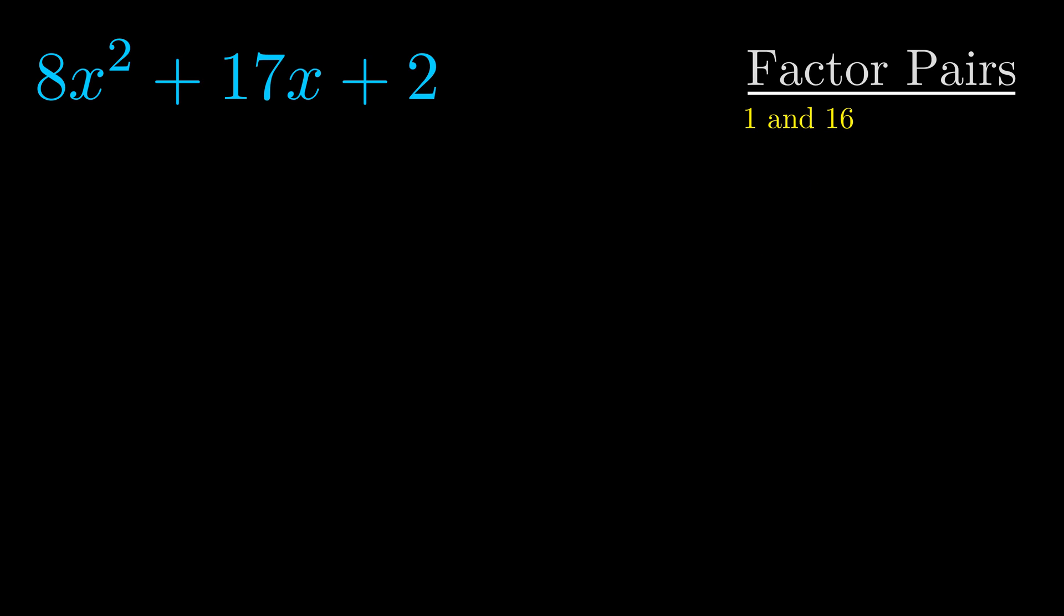Now once we have this factor pair, what we want to do is use it to split up the b value.